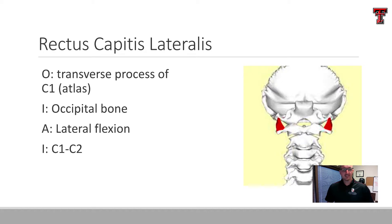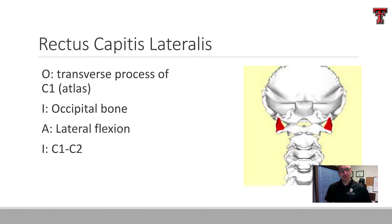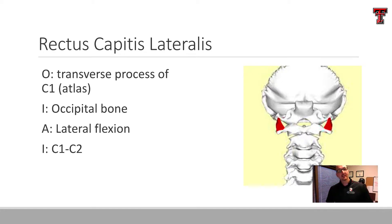The rectus capitis lateralis can also function eccentrically — for example, in the event that an athlete's head is being shoved away, like they're being tackled, something like that. This muscle gets its innervation through the C1 and C2 nerve roots.